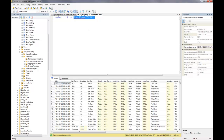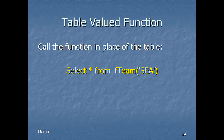Before continuing, let's review how to call that table-valued function. We replace the table name with the function that returns a table: SELECT * FROM fteam, passing a parameter. As long as the parameter contains a recognized team ID, you'll get those records back.